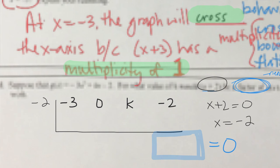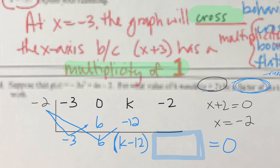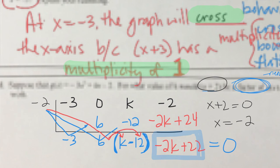Let's do the synthetic division. Drop down minus 3. Negative 2 times negative 3 is positive 6; add to get 6. Negative 2 times 6 is minus 12; add to get k minus 12. Multiplying k minus 12 by negative 2 gives negative 2k plus 24. So we have negative 2k plus 22 equals 0. Solving: 2k equals 22, so k equals 11.